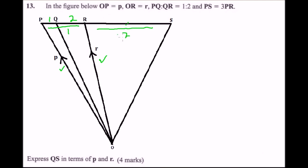We are asked to express QS in terms of p and r. We start by finding OQ. Using the ratio theorem: OQ equals 2 divided by (1+2) of p, which gives us 2/3 p, plus 1 divided by (1+2) of r, giving us 1 and a third r.